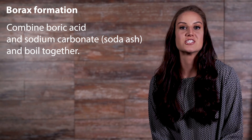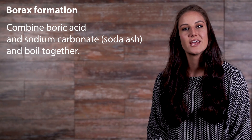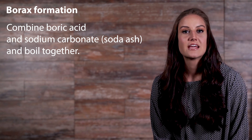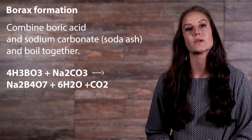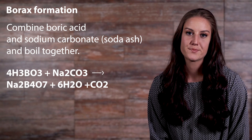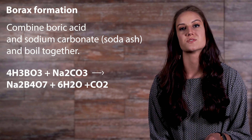How is borax formed? Remember, borax is a sodium salt of boric acid. So let's say we just have straight boric acid — what would need to happen to get borax out of it? You could combine boric acid and sodium carbonate, also known as soda ash, and boil the two together. The heat will help to catalyze the reaction. When the two react together, we get borax and carbon dioxide. When the substance cools, the borax will separate out.